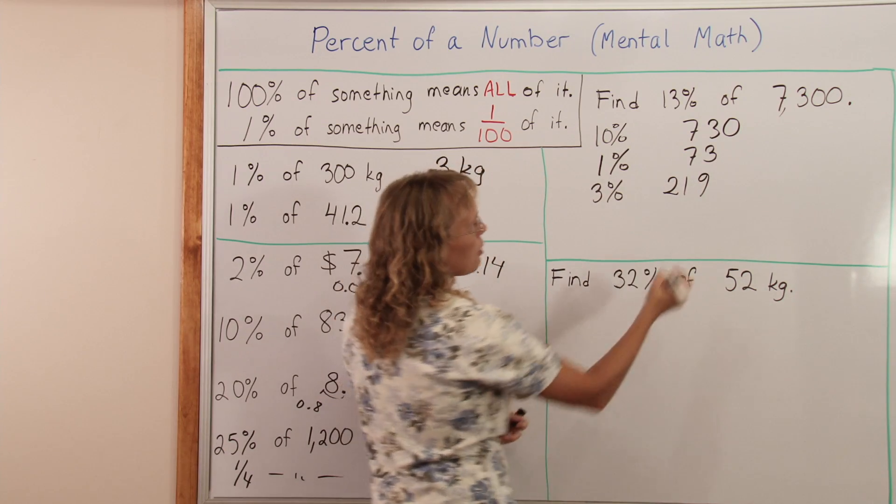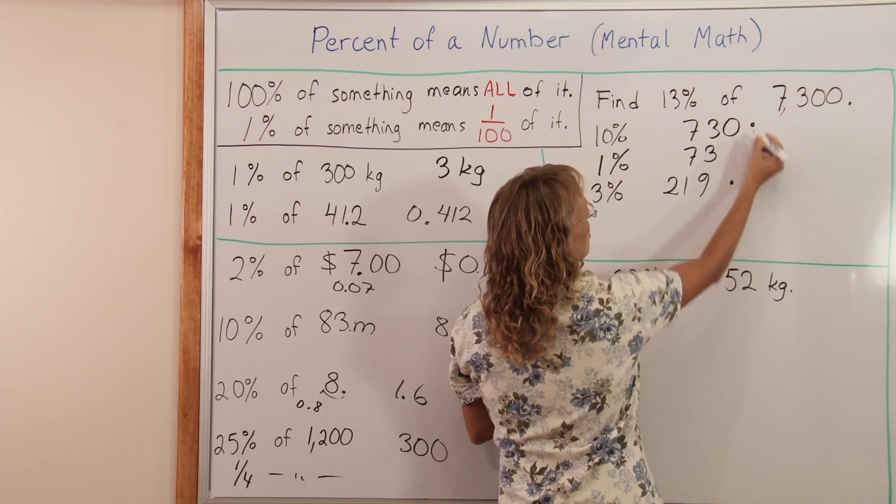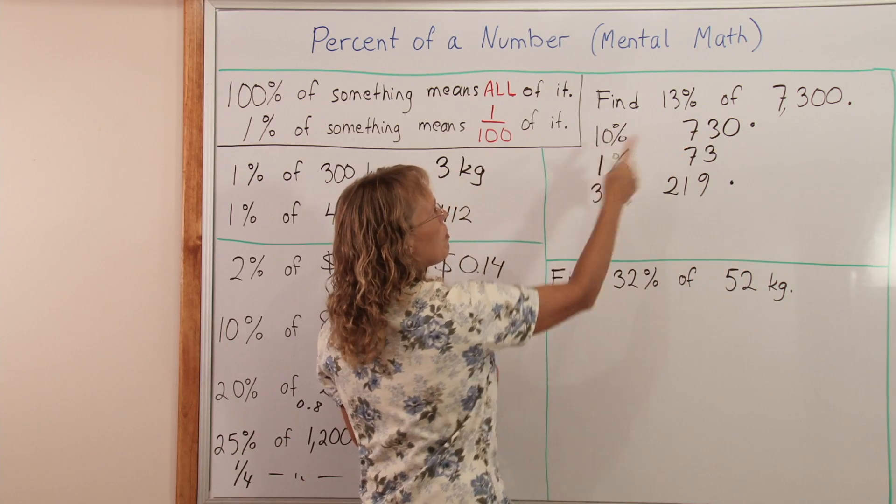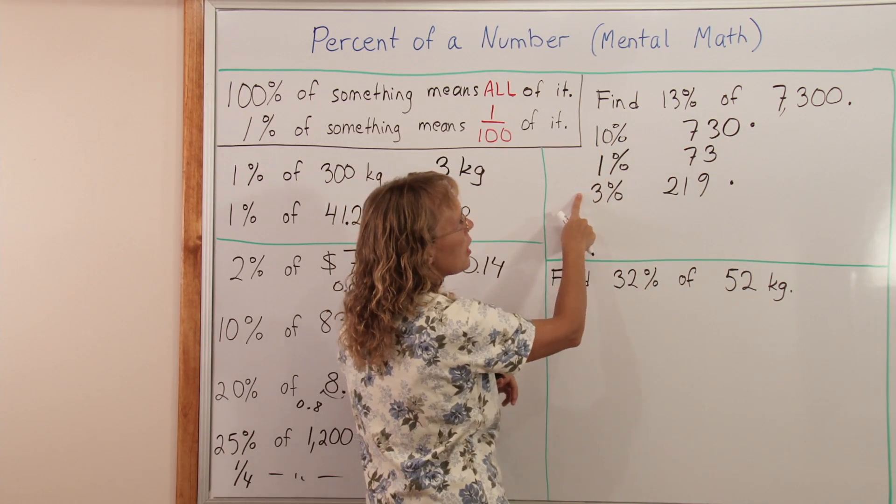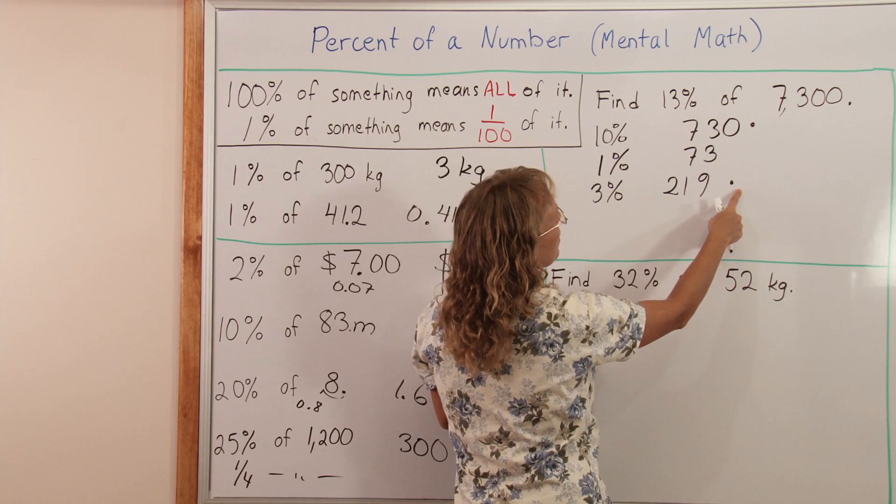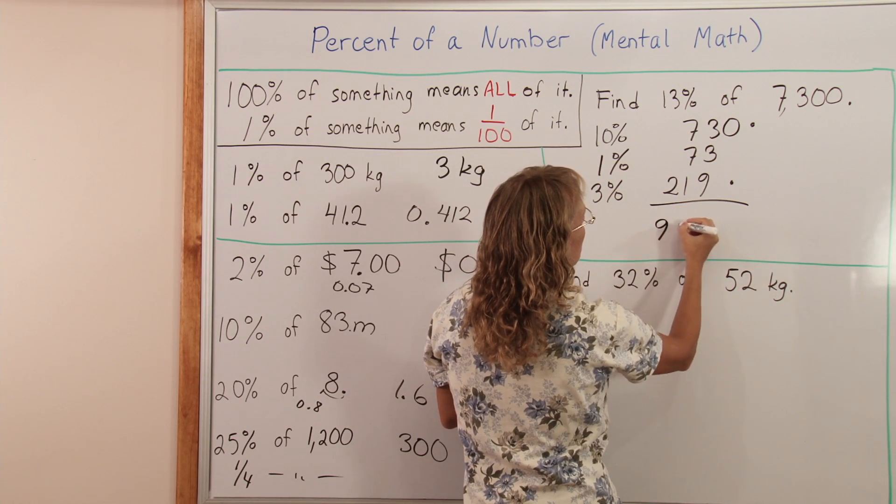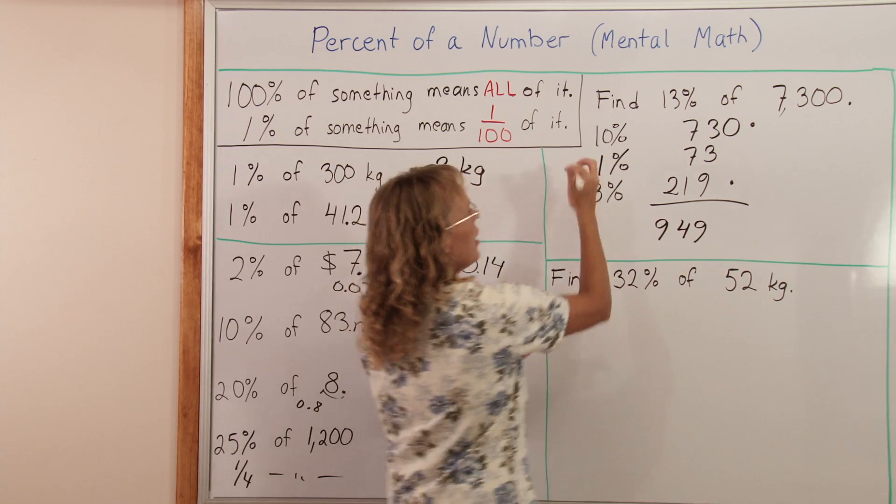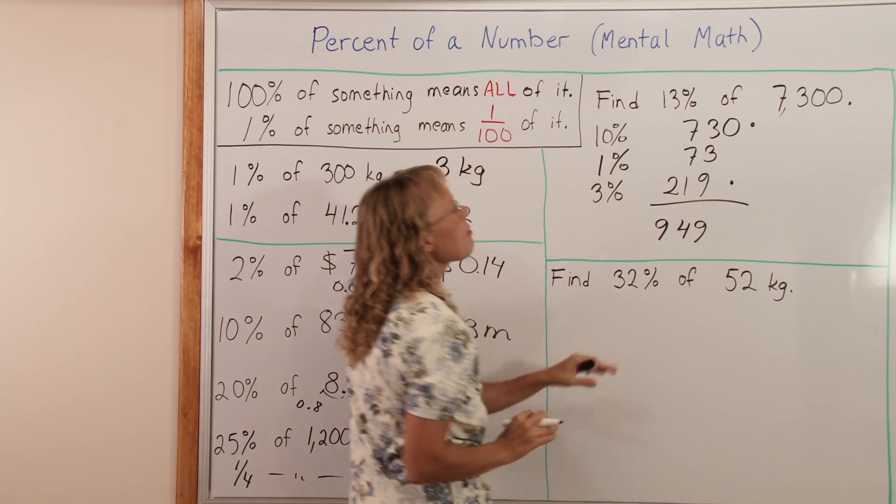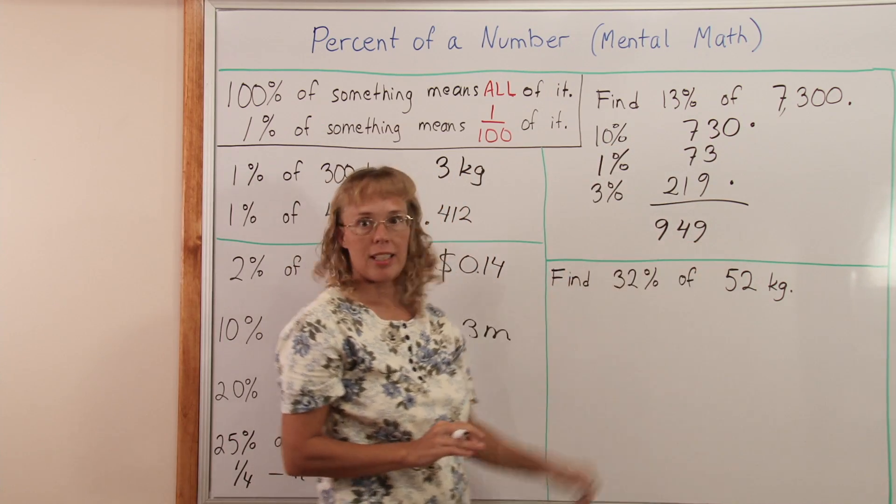And then we add this and this number. To get 13%, you have the 10% and 3%. Add these two numbers. So we get 7 plus 2 is 9, and 949 is our final answer.